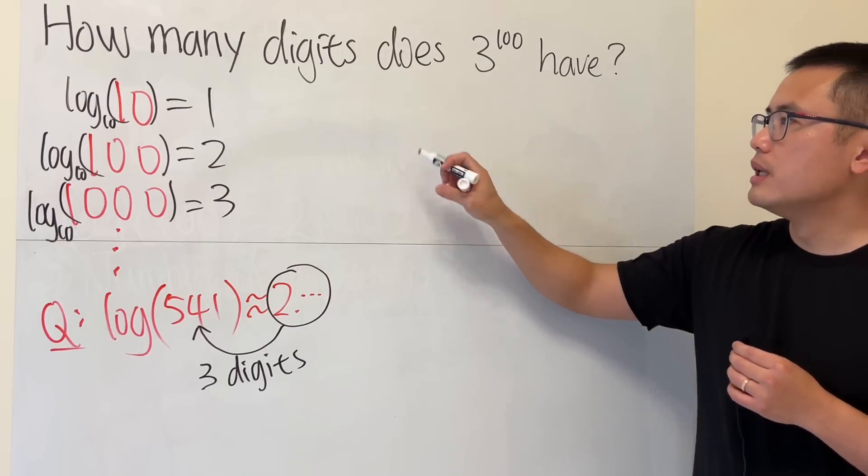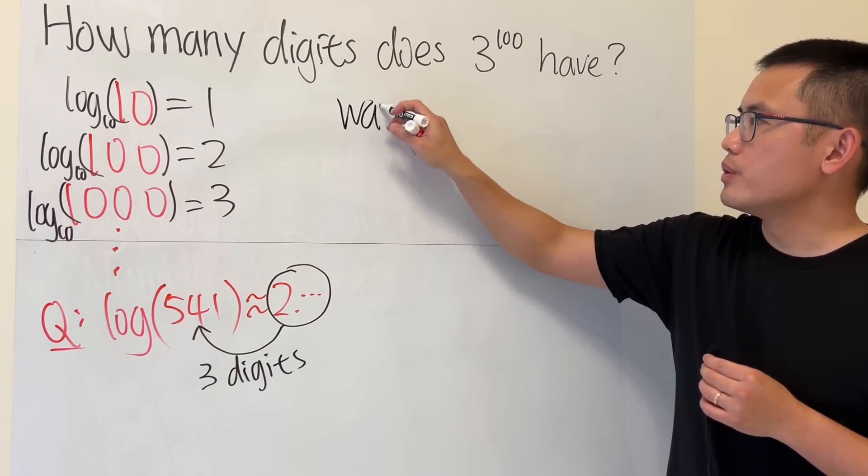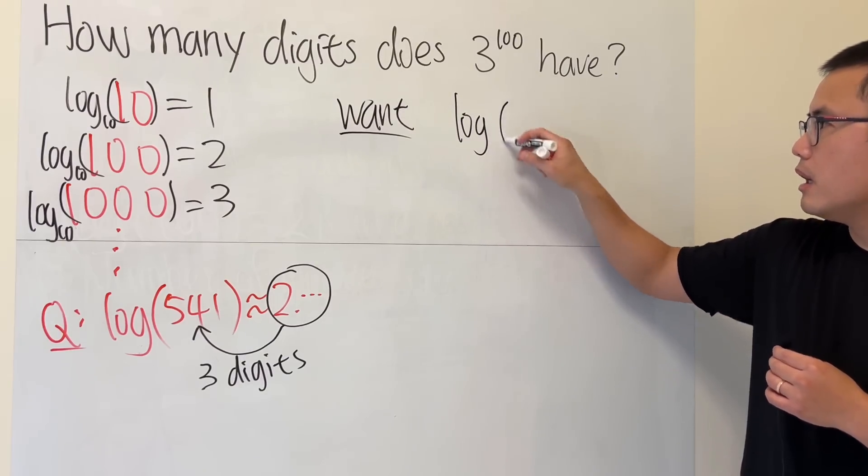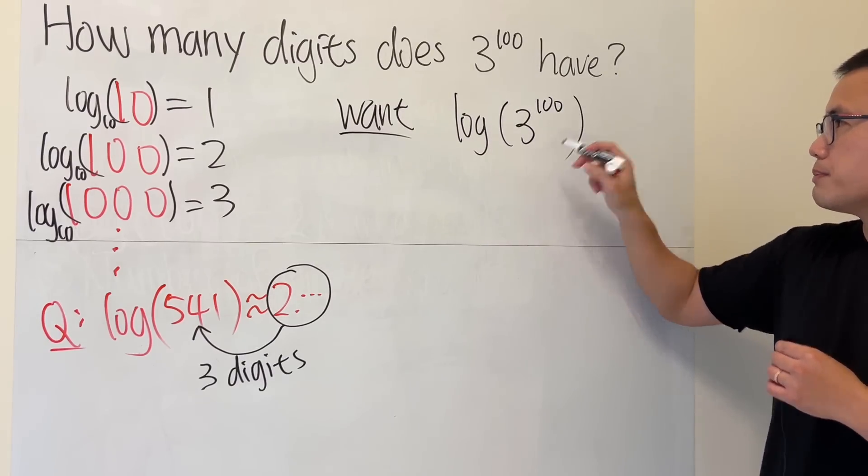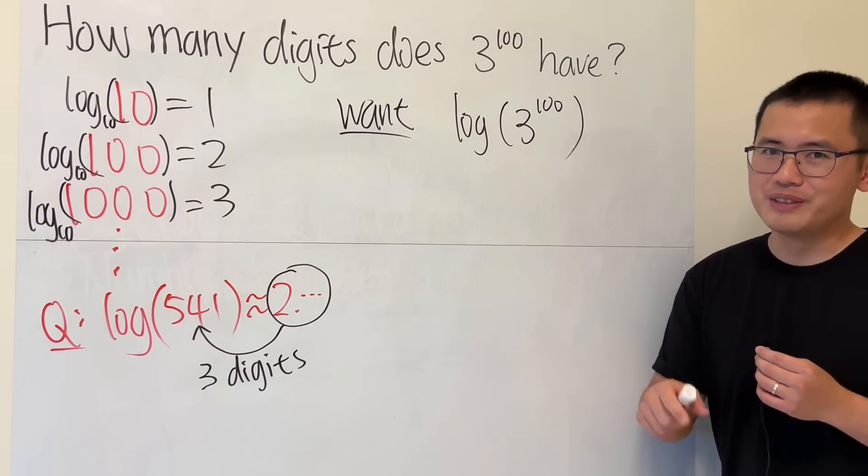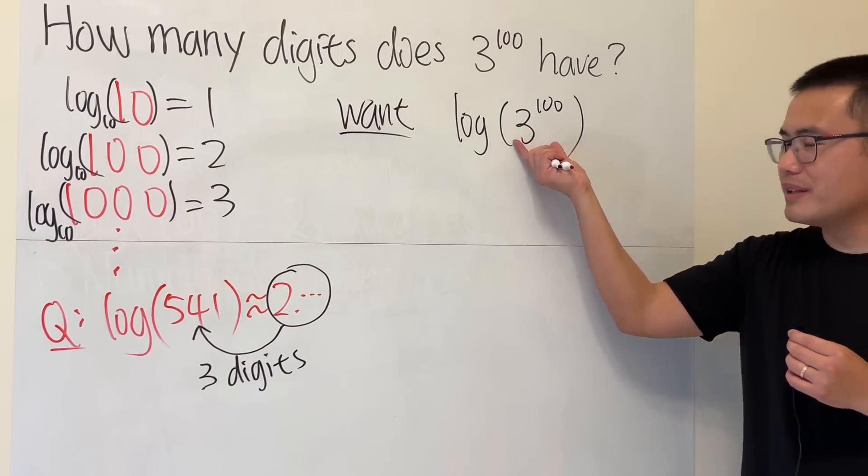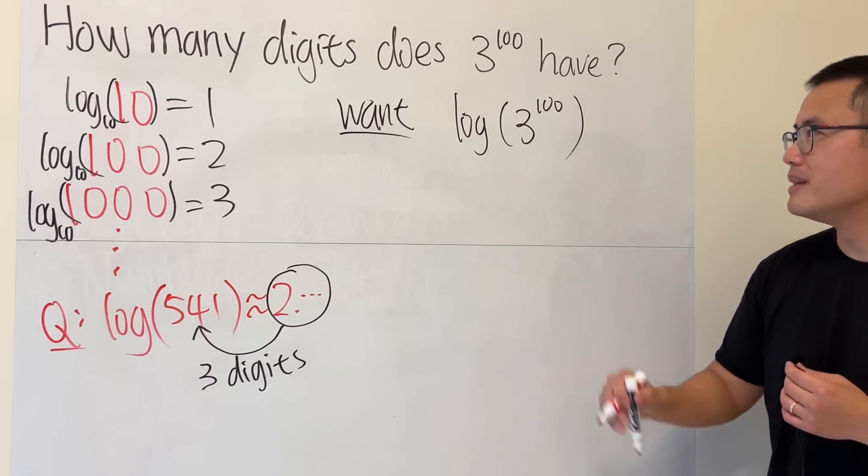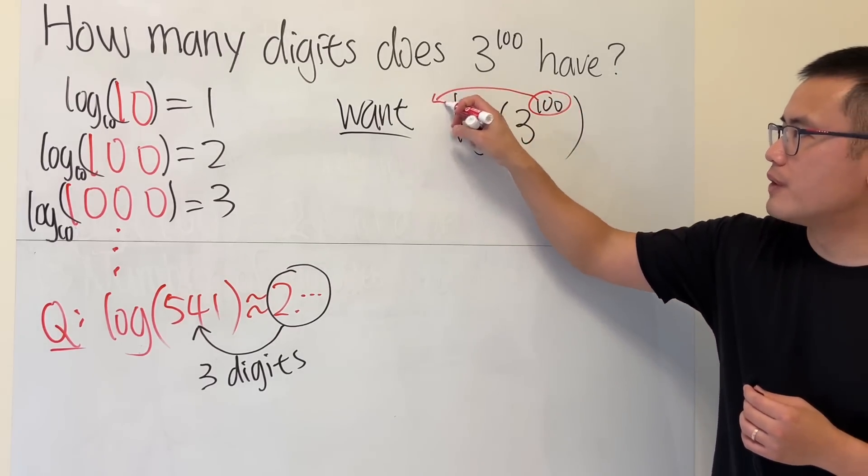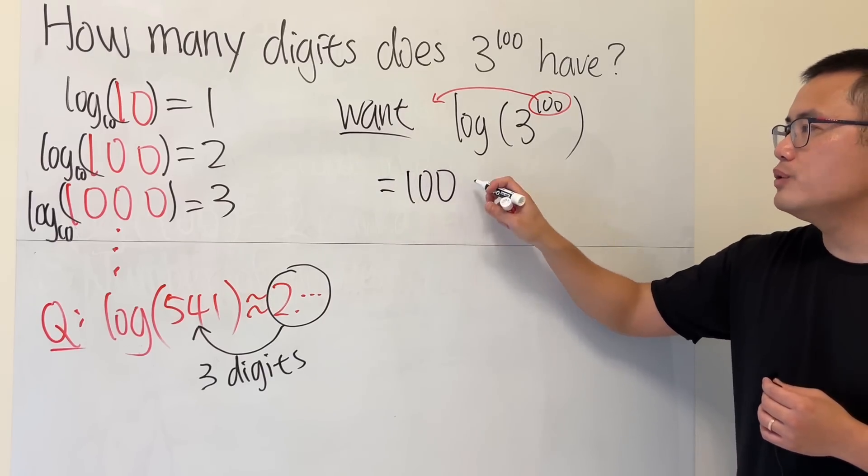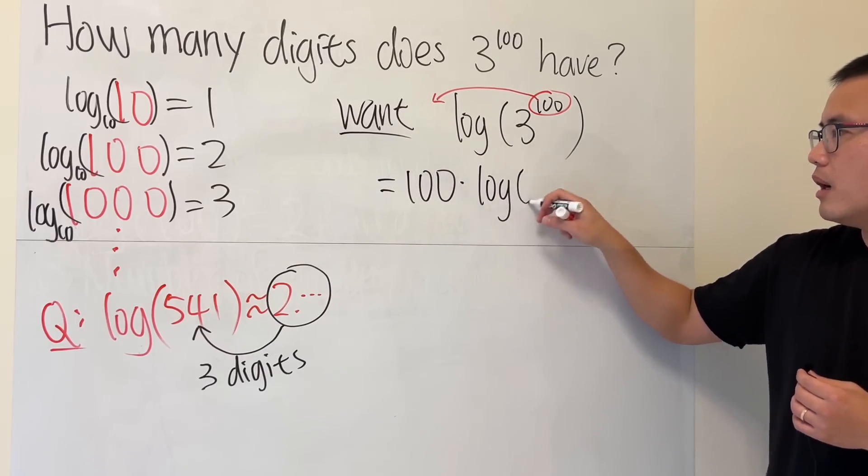Now we just have to compute log base 10 of 3 to the 100th power. But how do we do it? Well, first thing: do not work out the inside because that defeats the purpose. Use the property of logarithm, bring the power to the front, and we will just have a multiplication: 100 times log of 3.